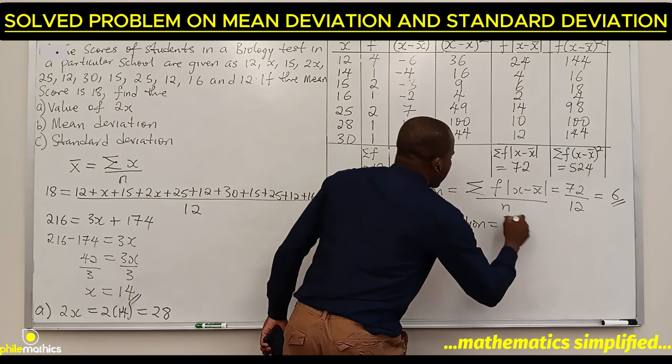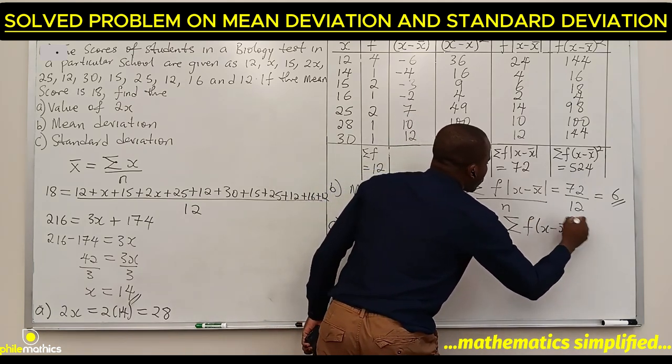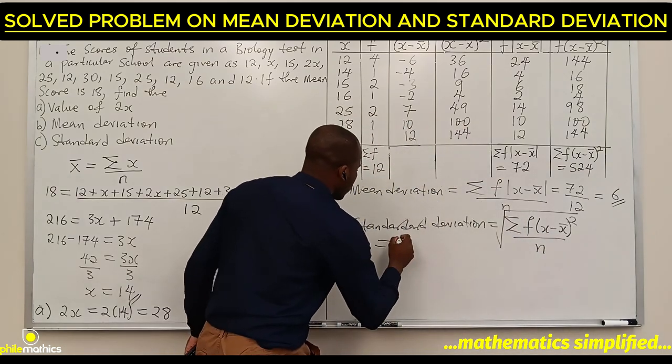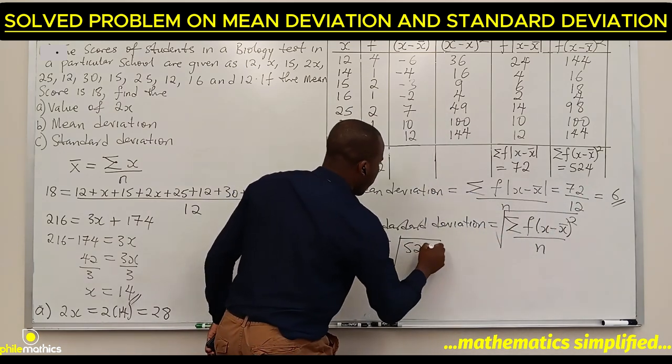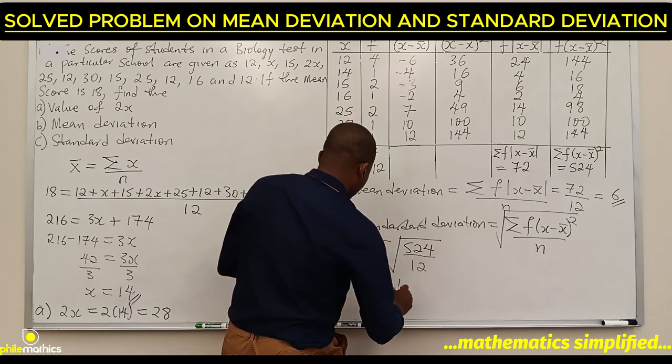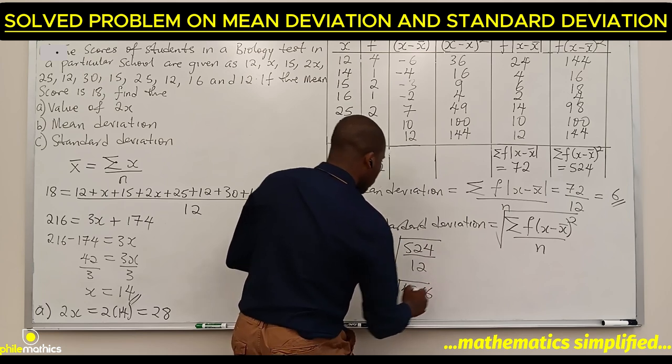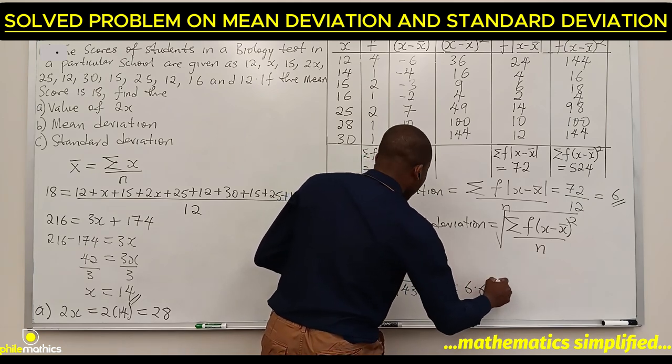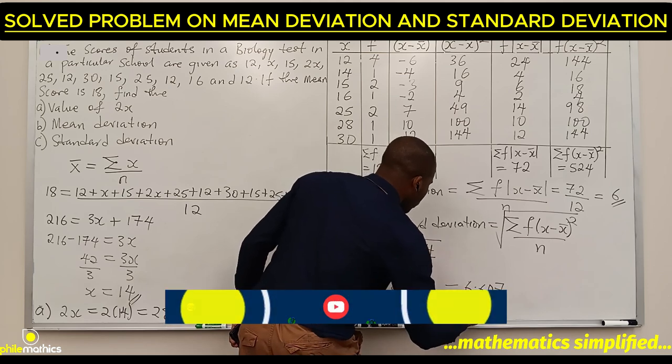For the standard deviation, the formula is square root of summation of f times x minus x-bar squared over n. If we calculate this, it's 524 over 12, which is square root of 43.66. If we take the square root, we have 6.607, approximately 6.6.